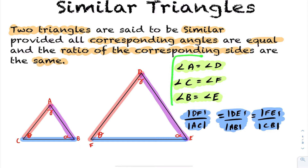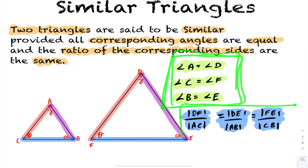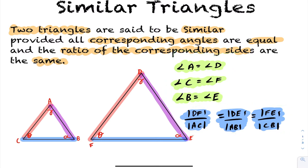So two triangles are similar if their corresponding angles are the same, or equivalently, the ratio of the corresponding sides are the same. If all their angles are the same, then the ratio of the corresponding sides will also be the same, and vice versa. Now we have a special relationship between these two triangles — let's see how we can use this to solve some math problems.